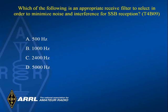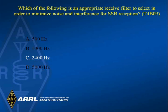Which of the following is an appropriate receiver filter to select in order to minimize noise and interference for single sideband reception? Answer C: 2400 Hz.